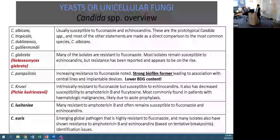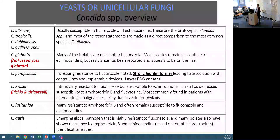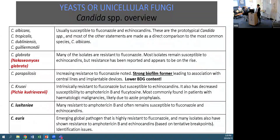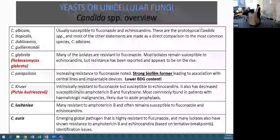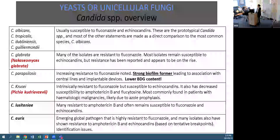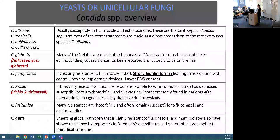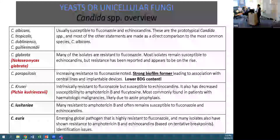Candida parapsilosis is showing increasing resistance to fluconazole. It is a very strong biofilm former, much like Candida albicans, and is associated with central lines and implantable devices. It also has a lower content of beta-D-glucan, so the sensitivity of the beta-D-glucan assay is affected in this specific species - it is lowest with Candida parapsilosis.